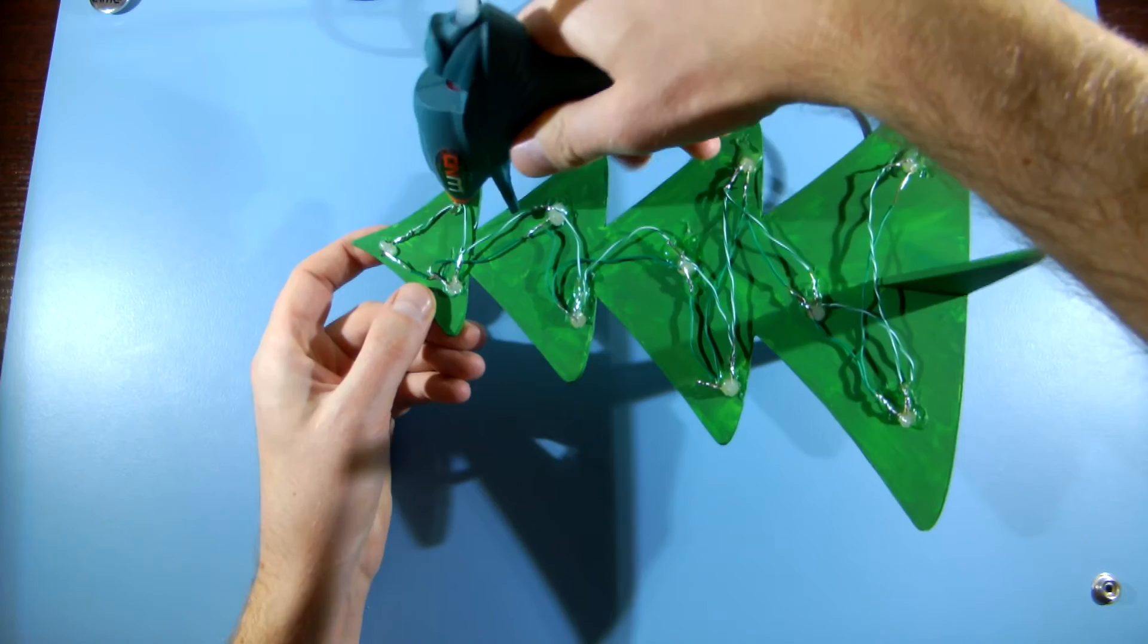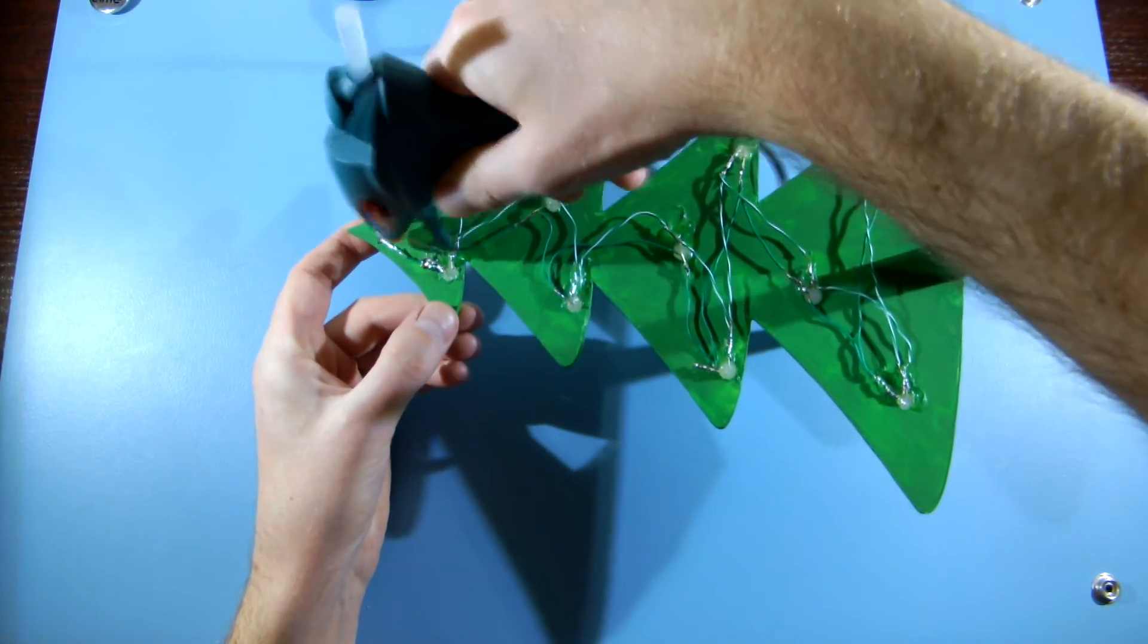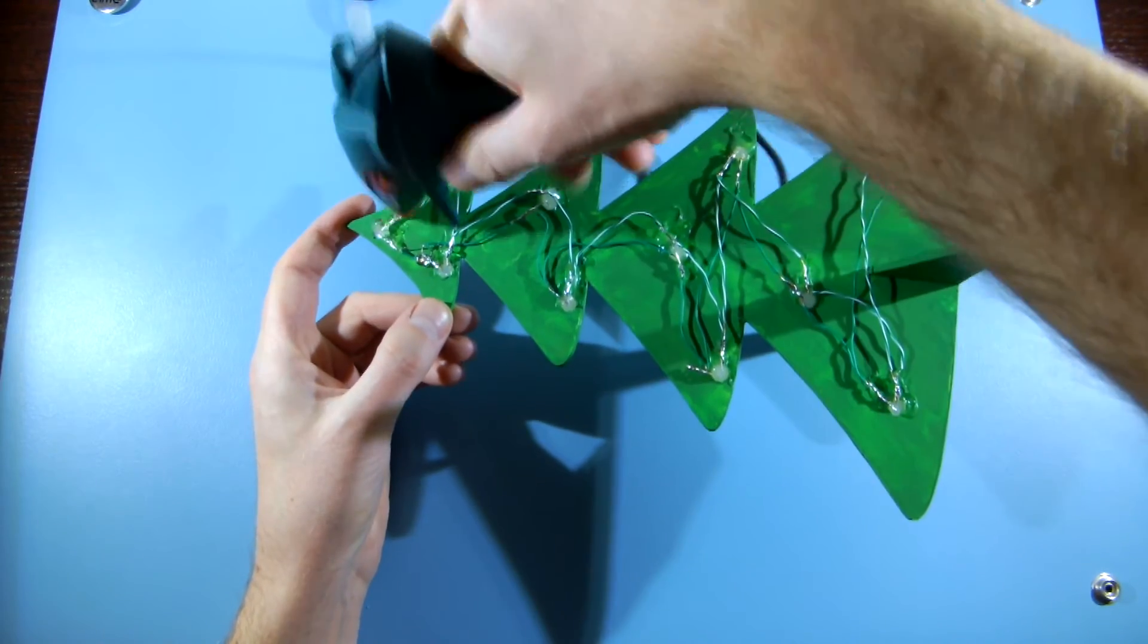If everything is wired correctly, you can use hot glue to hold all the wires in place and seal the joints.